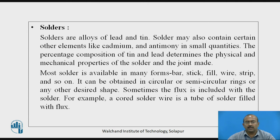Solders are alloys of lead and tin. Solders may also contain other elements like cadmium and antimony in small quantities. The percentage composition of tin and lead determines the physical and mechanical properties of solder and the joint made. Solder is available in many forms: bars, sticks, fills, wire, strips, and so on. It can be obtained in a circular or semi-circular ring or any other desired shape. Sometimes the flux is included with the solder — for example, a cold wire is a tube of solder filled with flux.